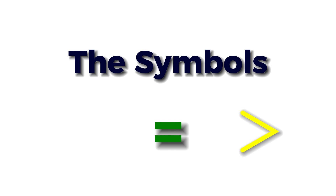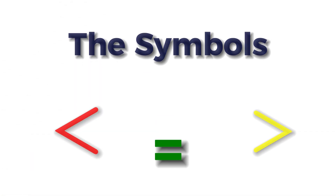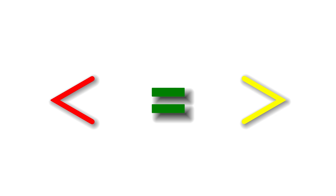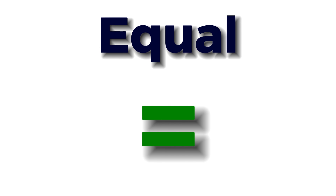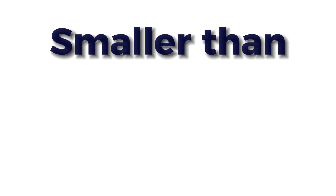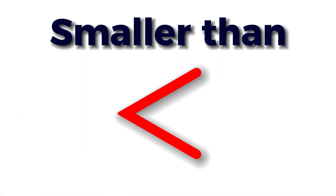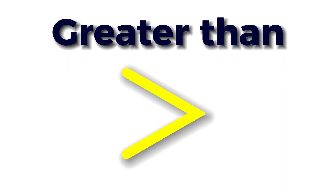Now let's talk about the symbols we use in maths for comparing numbers. We have the symbols: equals, greater than, and less than. In maths, we use signs rather than words to compare numbers. Instead of writing 'equal' in words, we write it as a sign. Instead of writing 'smaller than' in words, we write it as a sign. Instead of writing 'greater than' in words, we write it as a sign.